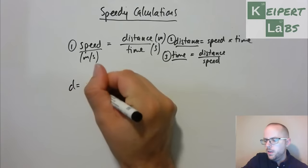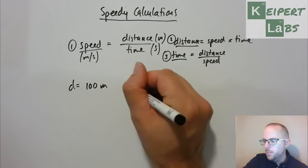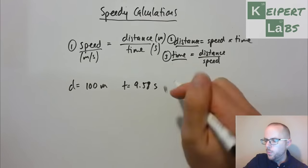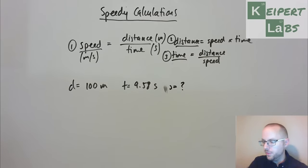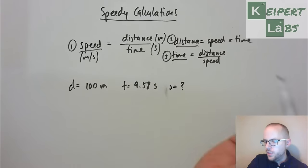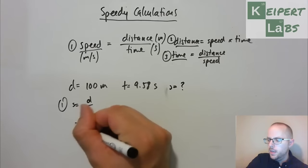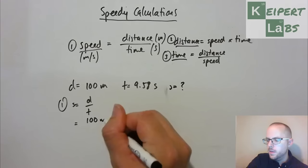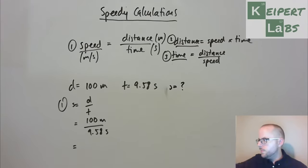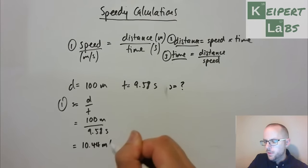So Usain Bolt, for his world record, travelled a distance of 100 metres in a time of 9.58 seconds and then wanting to work out, all right, well, what is his average speed? So just like before, we're going to use version one. Speed equals distance over time equals 100 metres divided by 9.58 seconds, which equals 10.44 metres per second.